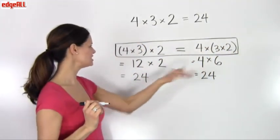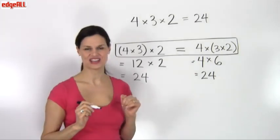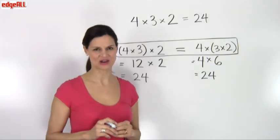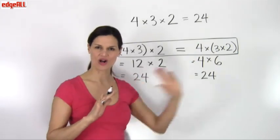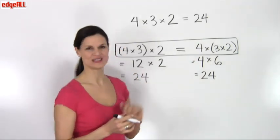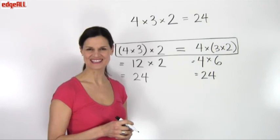And the order in which we do our multiplication will always get the same answer when our problem involves all multiplication. This is the associative property of multiplication.